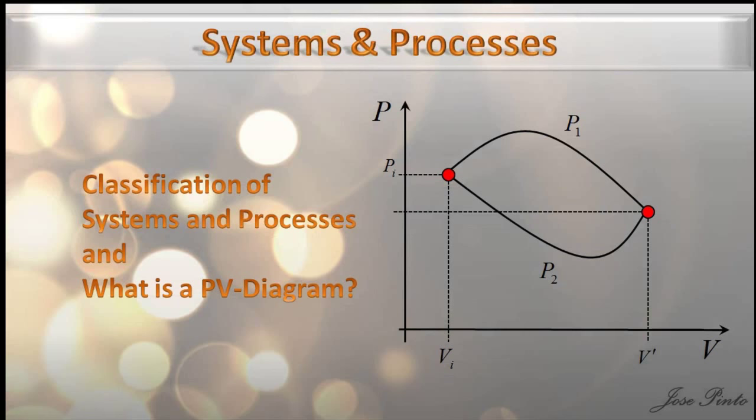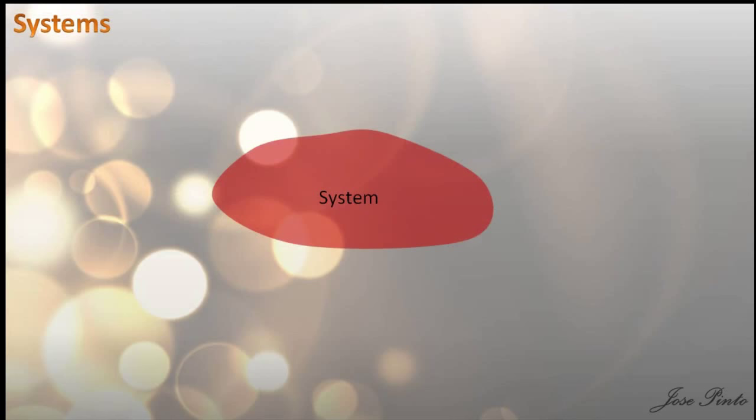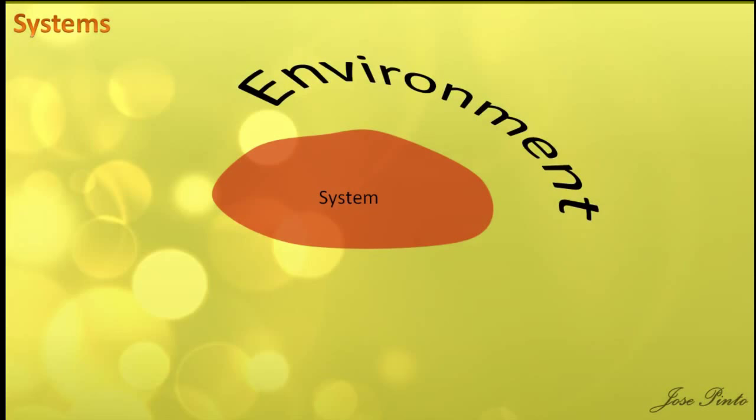Some basic definitions first. A thermodynamic system is a defined microscopic region of space that is studied using the principles concerning heat and its relation to other forms of energy and work. All space in the universe outside the thermodynamic system is known as the surrounding — you can call it the environment or the reservoir, although in practice this term is reserved for those parts of the environment that might affect the system directly.